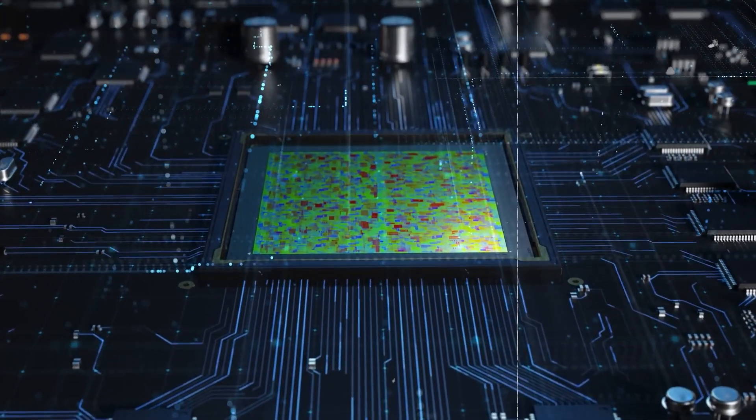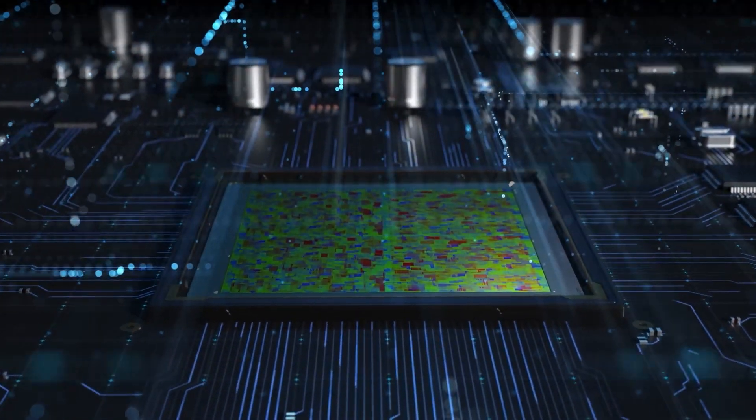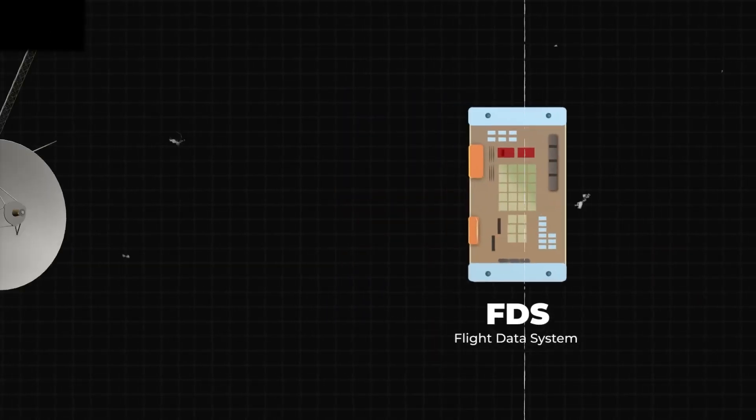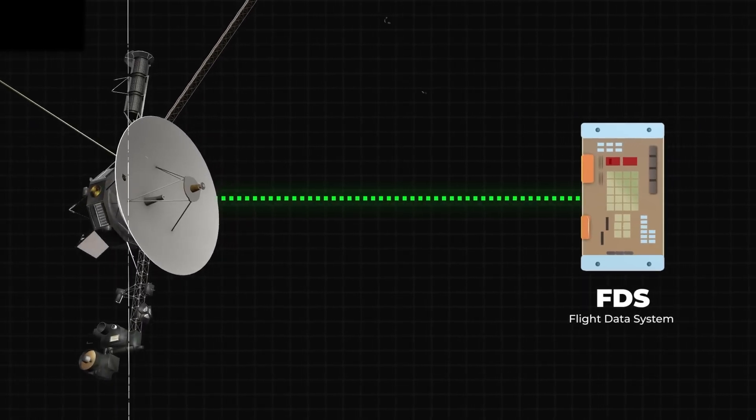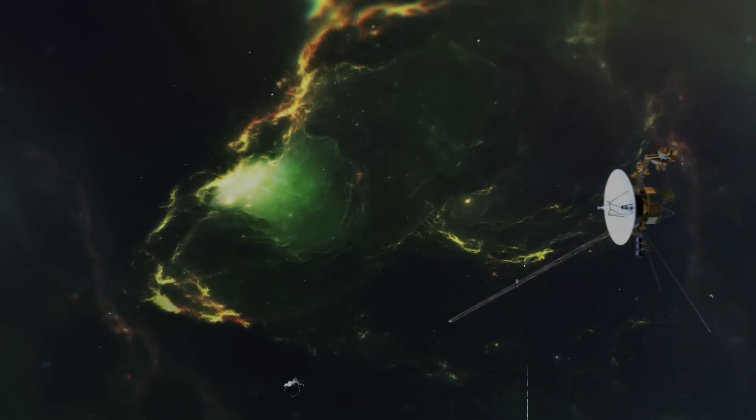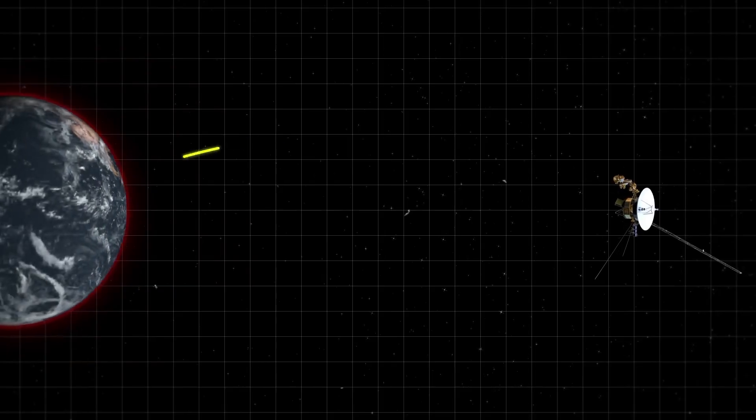On Voyager 1, there are three main computers. Recently, a glitch was traced to one of these computers, known as the Flight Data System. The FDS plays a crucial role in gathering data from scientific instruments studying the universe and monitoring the spacecraft's health.